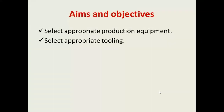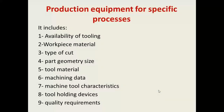The aims and objectives are to select appropriate production equipment and appropriate tooling. For selecting production equipment for a specific process, nine factors are considered: number one, availability of tooling; number two, work piece material; number three, type of cut; number four, part geometry and size; number five, tool material; number six, machining data; number seven, machining tool characteristics; number eight, tool loading devices; number nine, quality requirements.